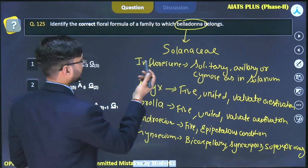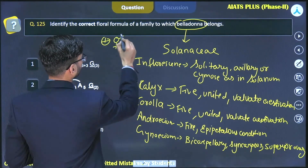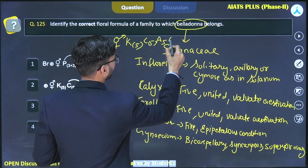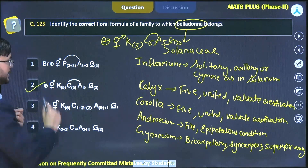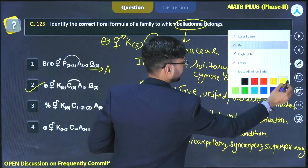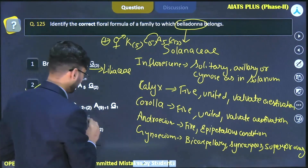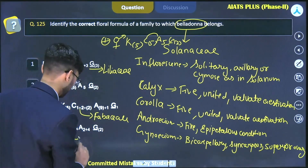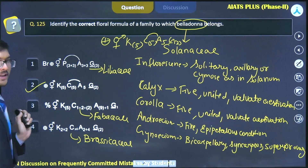The floral formula of the Solanaceae family shows an actinomorphic, bisexual flower with calyx, corolla, androecium, and gynoecium, where the androecium is fused with the corolla. The correct answer is option number two, while the others belong to the Asteraceae, Fabaceae, and Brassicaceae families.